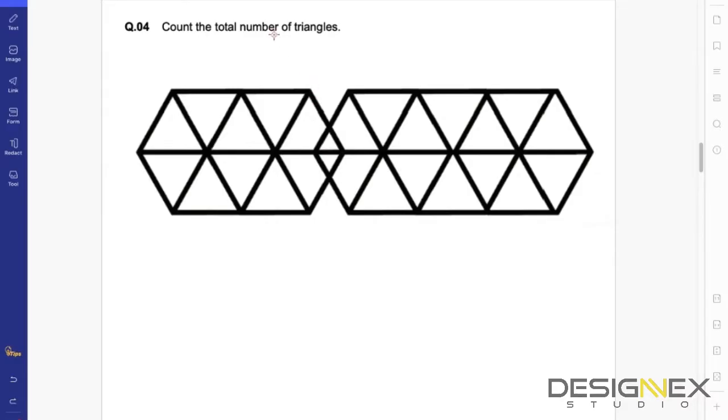Let us look at question number four. Here you have to count the number of triangles. If you closely observe this figure, we'll start by counting the number of smaller triangles, then move on to the bigger triangles which are overlapping, and then count the total number of triangles.